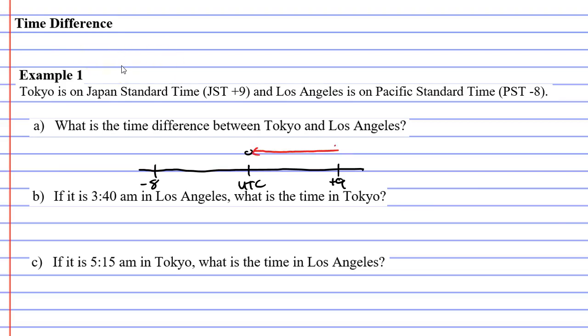And we're trying to find the time difference here. So what you do is you do it in two parts. There's actually 9 hours between Japan Standard Time and UTC, and there's 8 hours between Pacific Standard Time and UTC. So altogether, there is a 17-hour difference, and we got that by just going 9 plus 8.